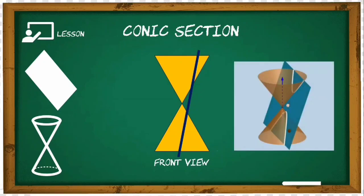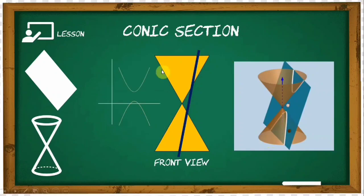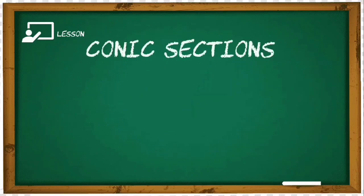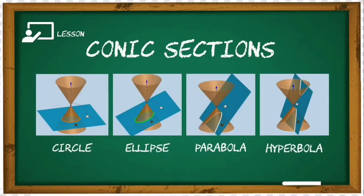In our 3D perspective, you can see we have two parabolas in the upper and lower parts of our double cone. The resulting graph on the x and y plane looks like two parabolas. Again, we have four different types of conic sections: namely, the circle, ellipse, parabola, and hyperbola.